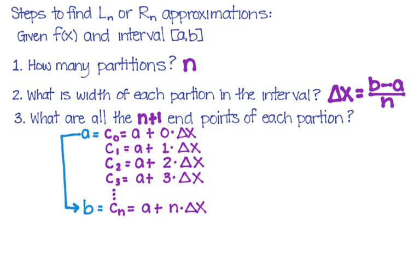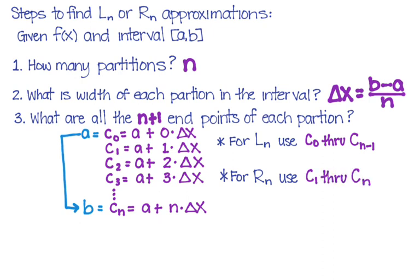And all of these other C sub numbers are the ones you found. So what do we do next? Well, we want to find, if it was L sub N, we're only going to use the left N endpoints. Which means you're going to start with C sub zero and you're going to go to the one right above, not the last one, but the one right before that. So that's why we say C sub zero, the initial, all the way through C sub N minus one.